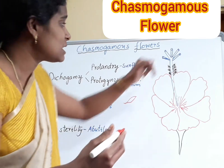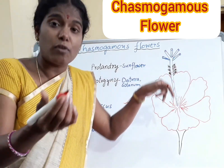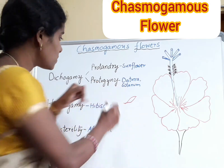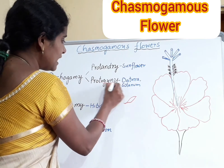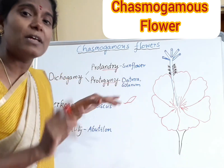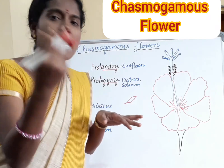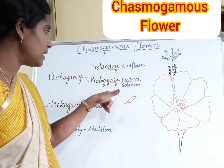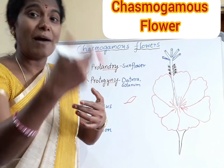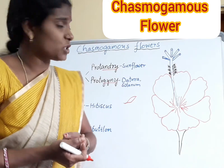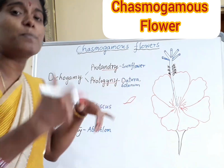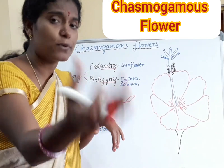In Protogyny — 'gyno' refers to gynoecium — the stigma matures first before the pollen grains. That is Protogyny. Examples for Protogyny are Datura and Solanum.